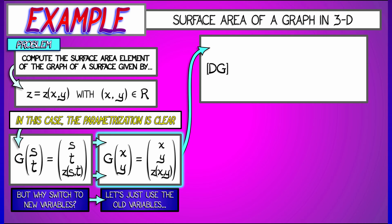To get the surface area element, we have to take the derivative of g. That is the partial with respect to x, and then the partial with respect to y. The partial of g with respect to x is 1, 0, and then partial z partial x. The partial of g with respect to y is 0, 1, and then partial z partial y.